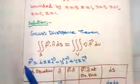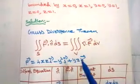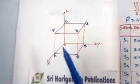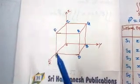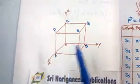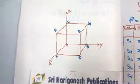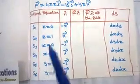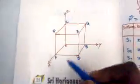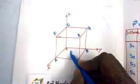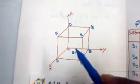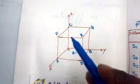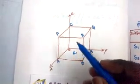The given vector is F = 4xz i − y² j + yz k. The cube has points a, b, c on the x, y, z axes respectively. There are six faces named S1 through S6. The first face S1 is z = 0, which is the base lying on the xy-plane.